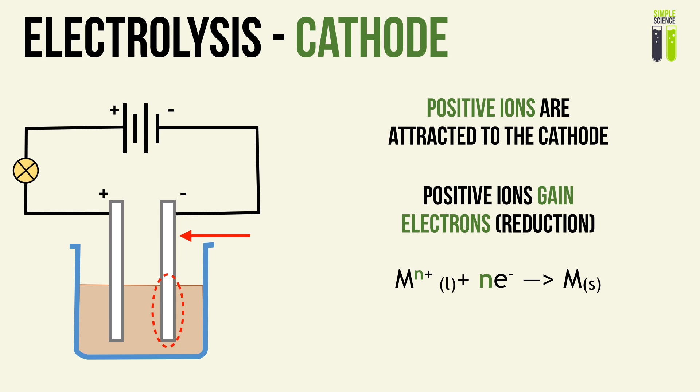An equation to describe this process is: Mⁿ⁺ (our positive metal ion in liquid state) gains n electrons in order to attain a neutral state, forming a neutral atom M, usually in solid form. Similarly, in an aqueous solution, positive ions as Mⁿ⁺ (aqueous) will also gain electrons — it is basically the same process, but the ions are in the aqueous state instead of liquid.